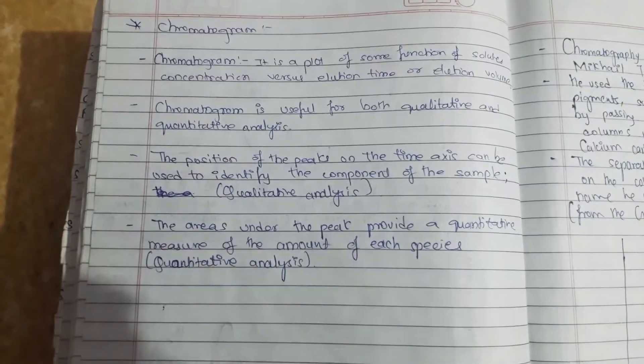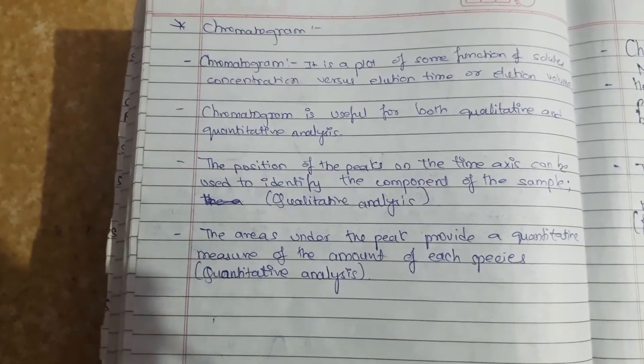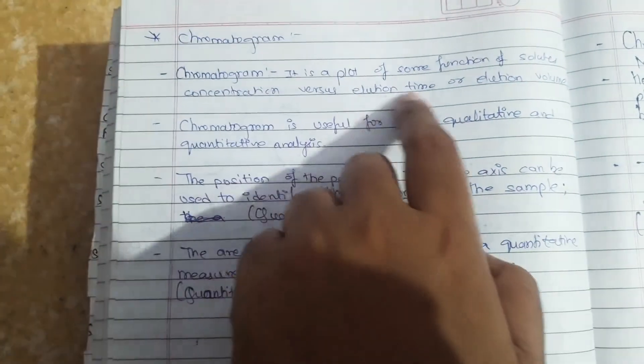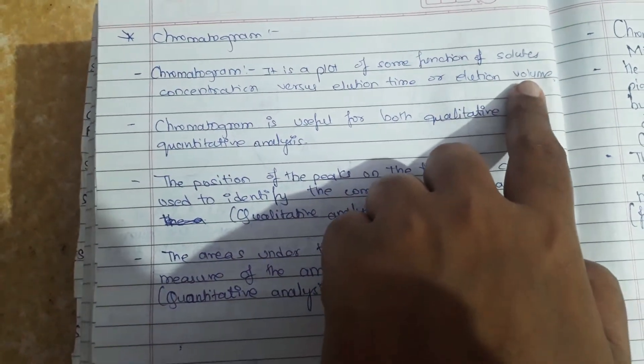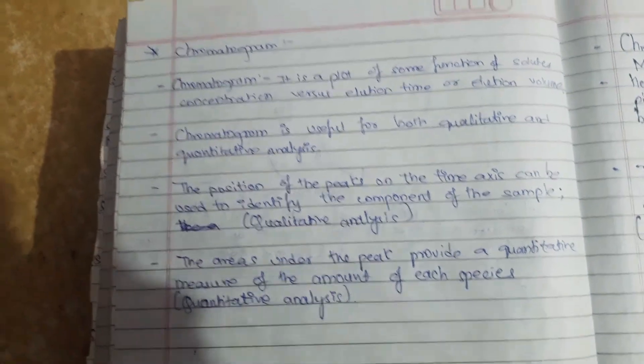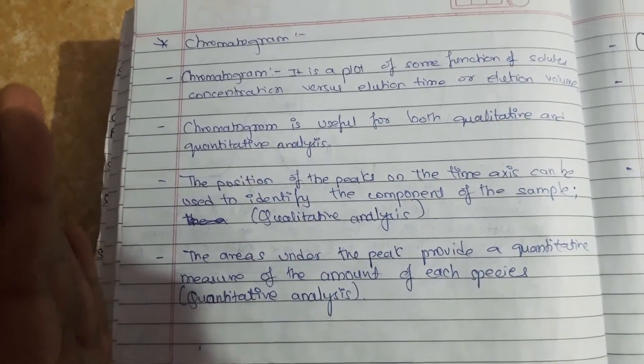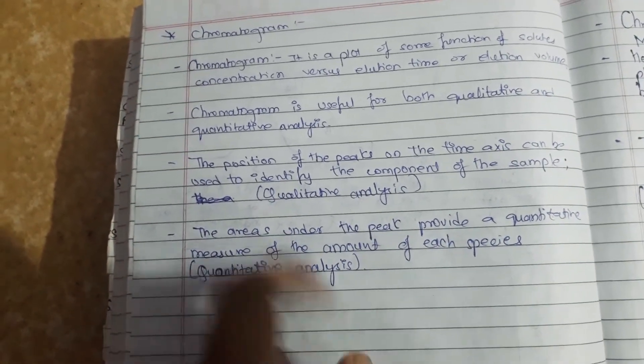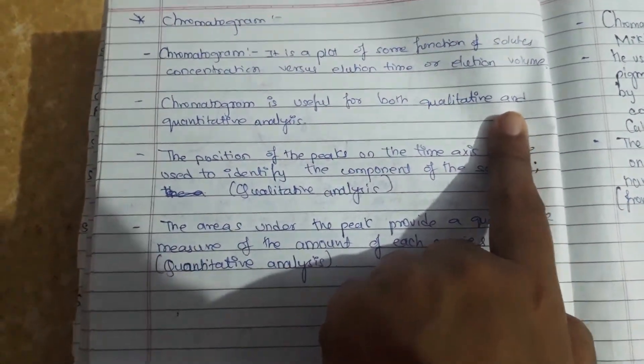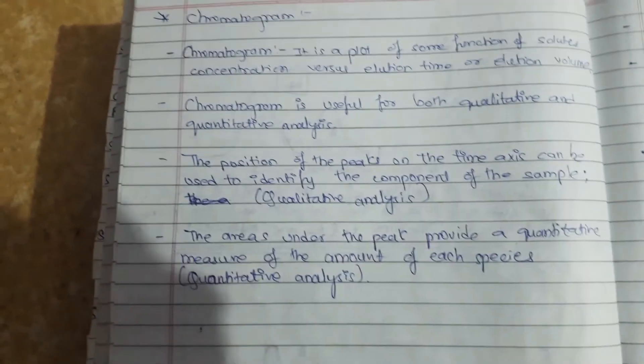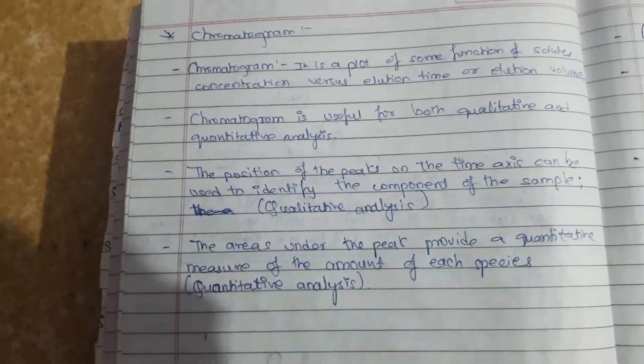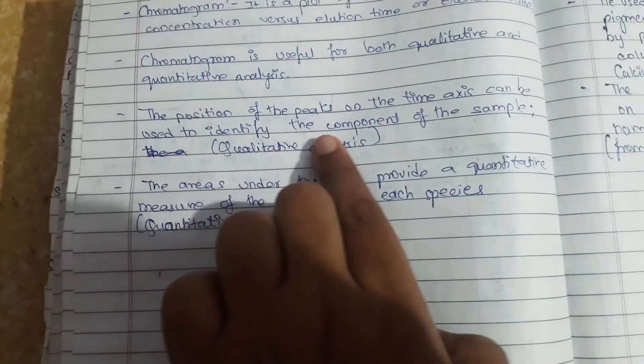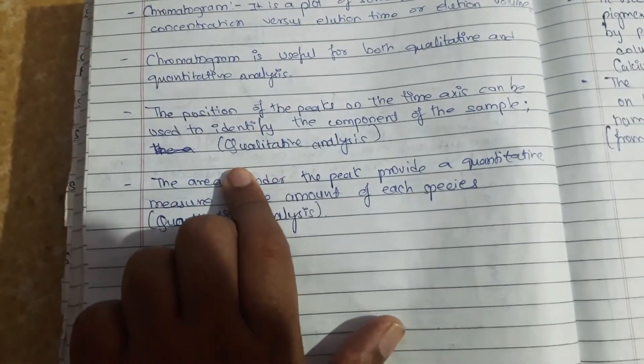As we know, this chromatogram graph is a plot of solute concentration versus elution time and elution volume. Chromatogram is useful for both qualitative and quantitative analysis. For qualitative analysis, the position of the peak on the time axis can be used to identify the component of the sample.